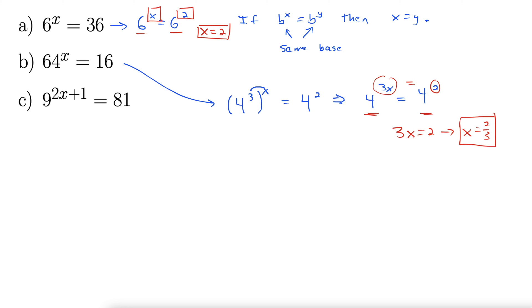At the end of the video, I'll show an alternate way of doing that same problem. But let's move on to part c. Part c says 9 to the 2x plus 1 power equals 81. Okay, well, we know we can write 81 as a power of 9. It's simply 9 squared.